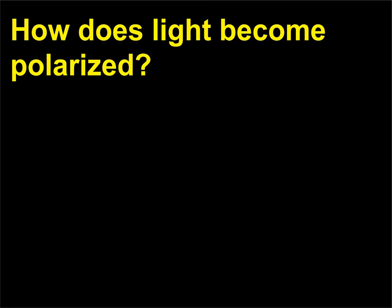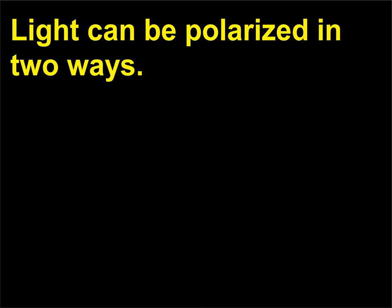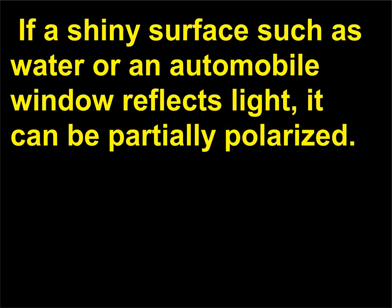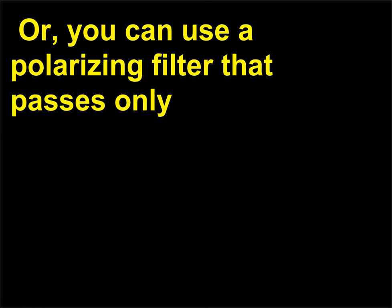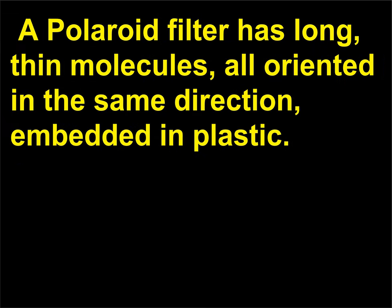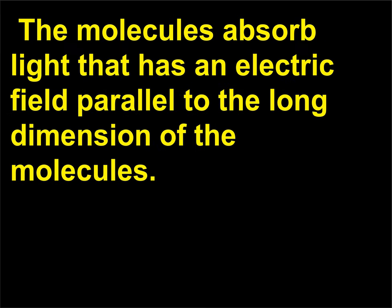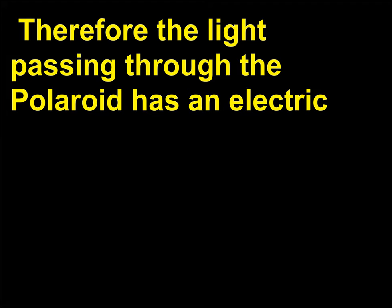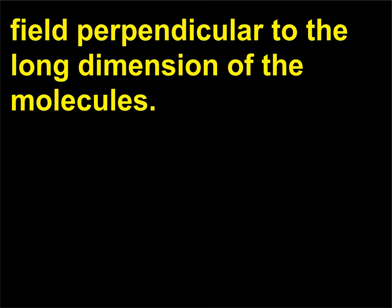How does light become polarized? Light can be polarized in two ways. If a shiny surface such as water or an automobile window reflects light, it can be partially polarized. Or you can use a polarizing filter that passes only the light that has the electric field in one orientation. A Polaroid filter has long, thin molecules all oriented in the same direction embedded in plastic. The molecules absorb light that has an electric field parallel to the long dimension of the molecules. Therefore the light passing through the Polaroid has an electric field perpendicular to the long dimension of the molecules.